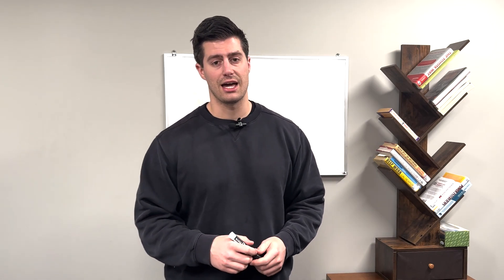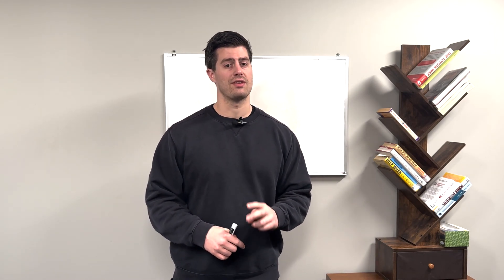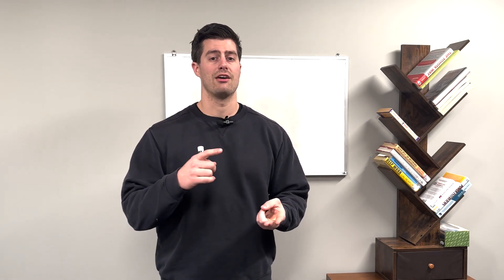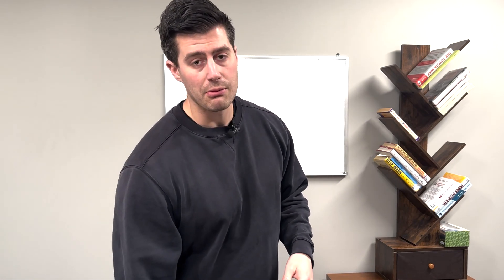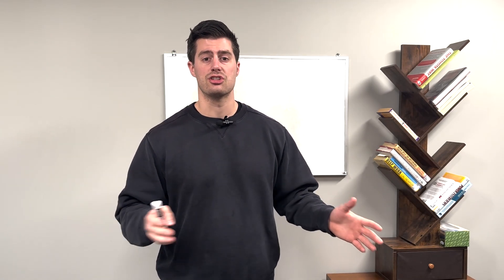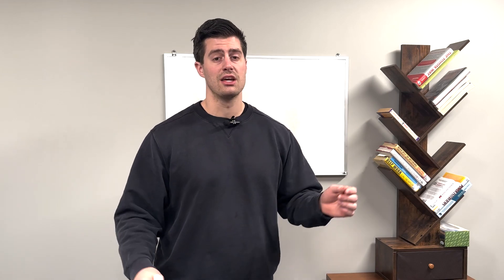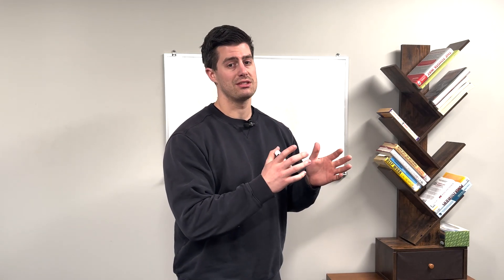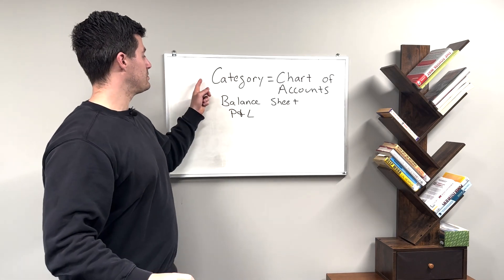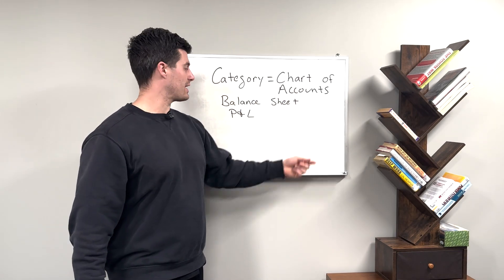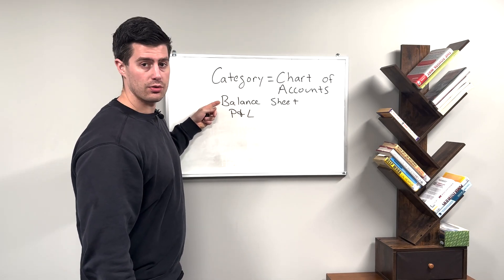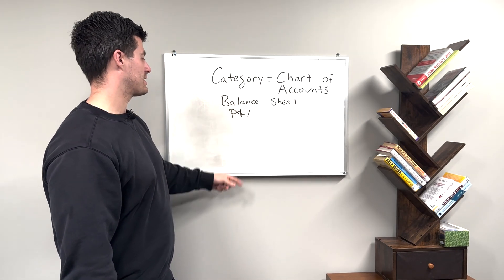How am I going to categorize this transaction? There are two main types of categories: balance sheet chart of accounts and profit and loss chart of accounts. I'm going to use the word category and the phrase chart of accounts interchangeably — anytime you hear chart of accounts, think category, and anytime I say category, think chart of accounts. So we have two main types: balance sheet categories and profit and loss categories.